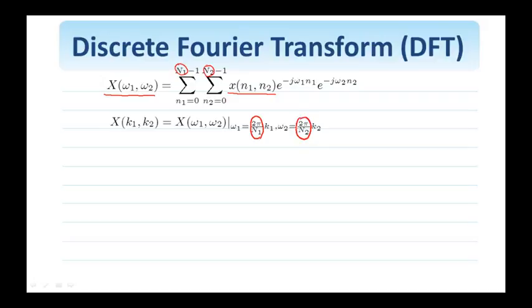And by doing this sampling of the frequency domain, I only keep one period. So k1 is from 0 to n1 minus 1, k2 between 0 and n2 minus 1. And again, this is for an n1 by n2 image.